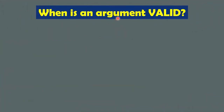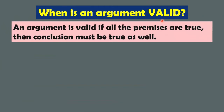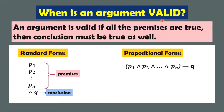Now, when they say that an argument is valid — so when is our argument valid? An argument is valid if all the premises are true, then the conclusion must be true as well. So you assume all premises are true, and the conclusion Q must also follow as true. For the propositional form, you may want to prove this conditional statement is a tautology using a truth table. If you were able to prove that the propositional form is a tautology, then you say the argument is valid.